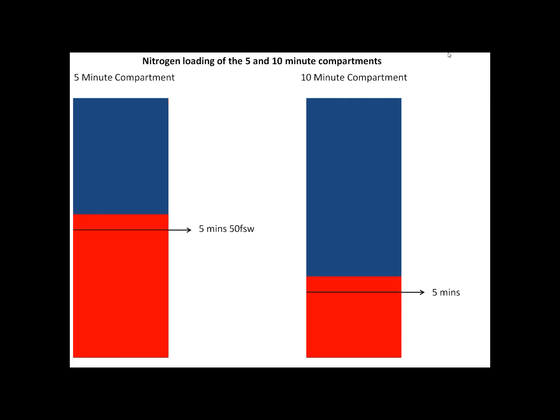On a dive to 100 feet, after 5 minutes, the 5-minute compartment would have a nitrogen loading of 50 feet of seawater. The 10-minute compartment would have something below that — and there's a very big reason I haven't put an actual number there, because the relationship isn't linear. We couldn't say it would be exactly 25 feet of seawater; it would be close, but we can't precisely calculate it. After 10 minutes of dive time, the 5-minute compartment has done two half times and would be at 75 feet of seawater nitrogen loading. The 10-minute compartment has now done one half time, so its nitrogen loading would be 50 feet of seawater.